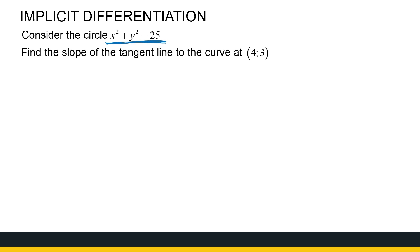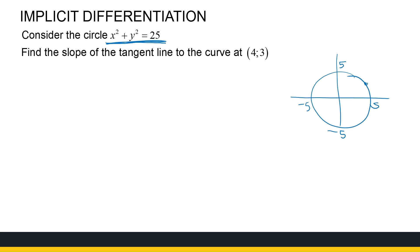We can make y the subject of the formula here, but then we'll have a plus-minus root. In this case that is not a function because we've got a circle. But we're asked for the slope of the tangent line to the curve at the point (4, 3). The fact that x² + y² = 25 is not a function doesn't mean we can't calculate the slope.